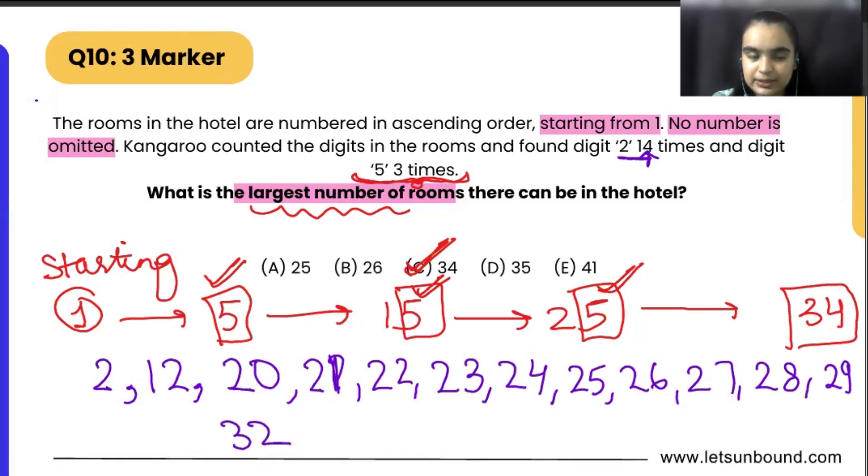And then what we can have? 32. So what I did, I wrote the numbers, the room numbers, all from 1 to 34 which have 2 in it, which have digit 2 in it. Now let's count whether we are having 14 or not.